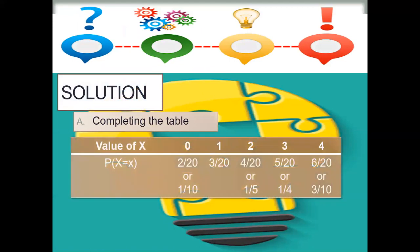Completing the table, since the value of a equals 1 over 20, we substitute a into the table. If x equals 0, the probability is 2 over 20 or 1 over 10. If x equals 1, the probability is 3 over 20. If x equals 2, the probability is 4 over 20 or 1 over 5. If x equals 3, the probability is 5 over 20 or 1 over 4. If x equals 4, the probability is 6 over 20 or 3 over 10.